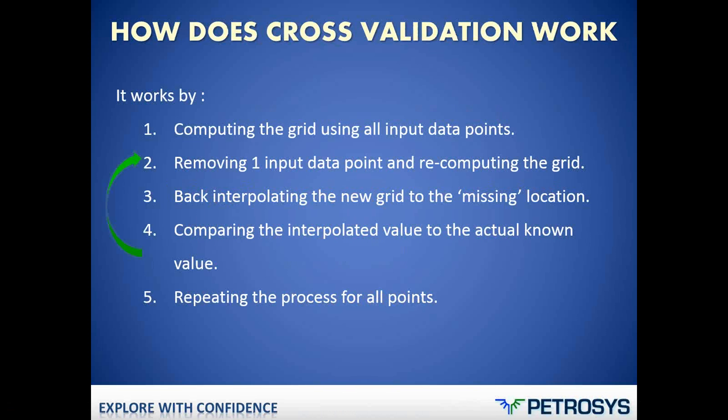What is cross-validation? Cross-validation is a feature accessible from the surface modeling, from the gridding panel, and it works in several steps. In the first step, it computes the grid using all input data points. In the next step, it removes one of the input data points and recomputes the grid with that point missing. Then it takes the new value from the new grid and back-interpolates this value to the missing point location, giving us an estimated value for that point.